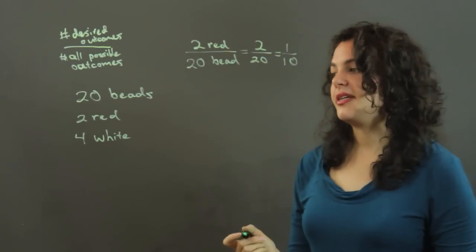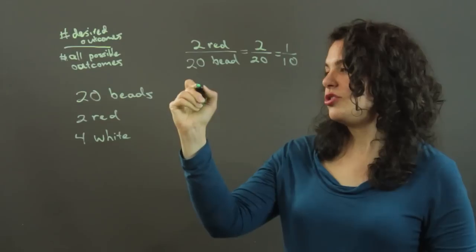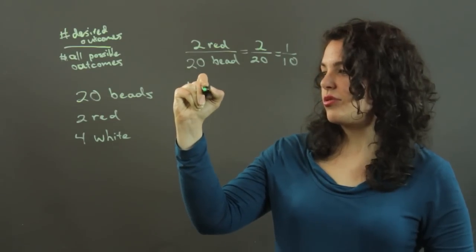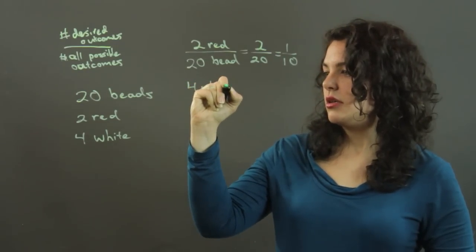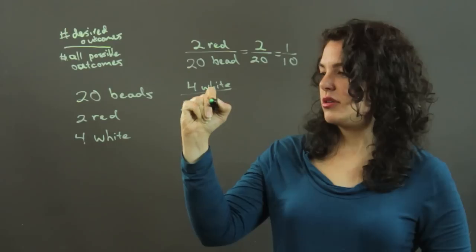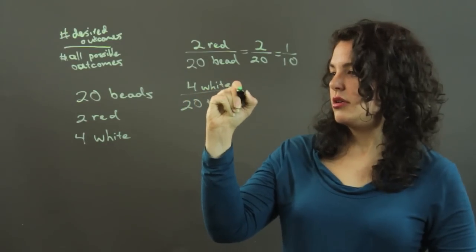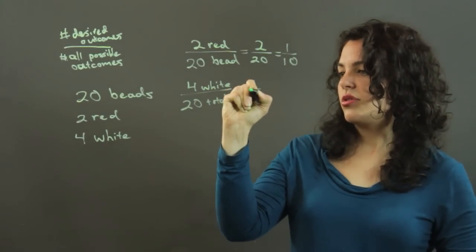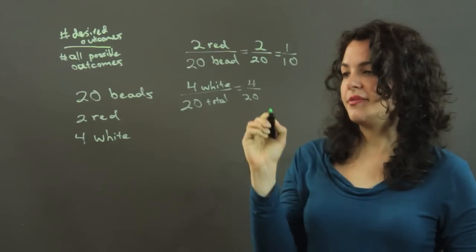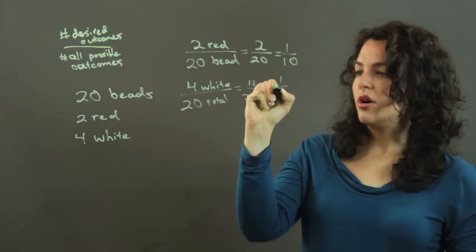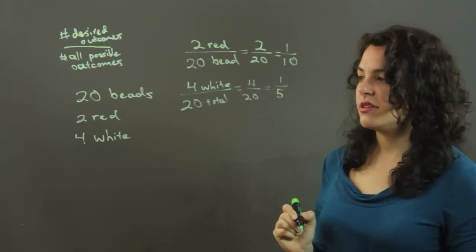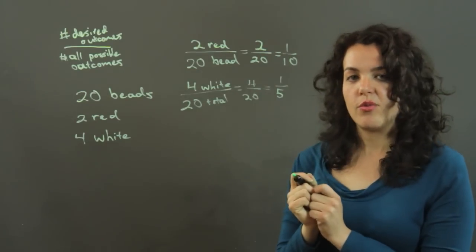That's our probability. Then the probability that we'll choose white, 4 white over the 20 total count, gives us 4 over 20, or a 1 in 5 chance of pulling out a white bead.